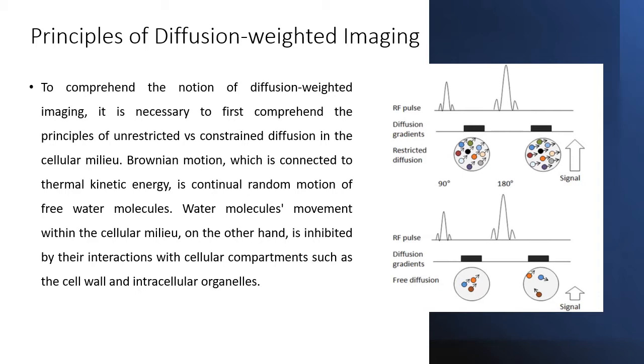Brownian motion, which is connected to thermokinetic energy, is continual random motion of free water molecules. Water molecules movement within the cellular milieu, on the other hand, is inhibited by their interactions with cellular compartments such as the cell wall and intracellular organelles.